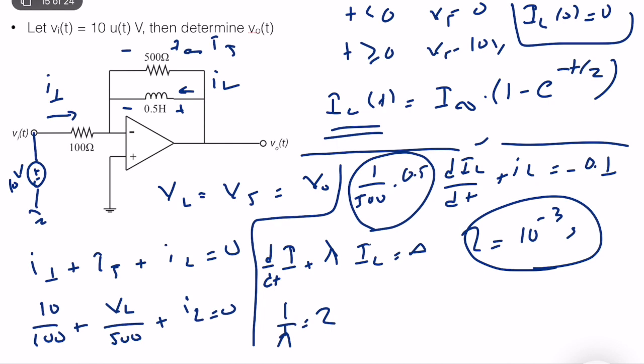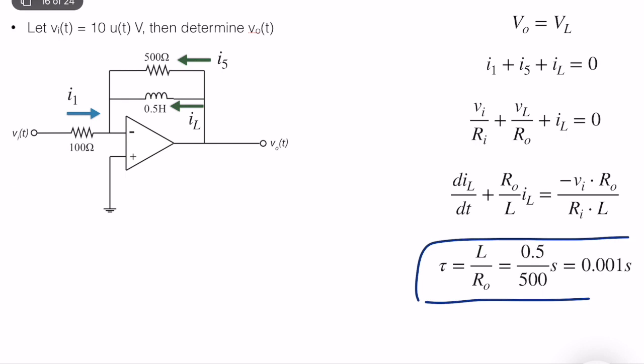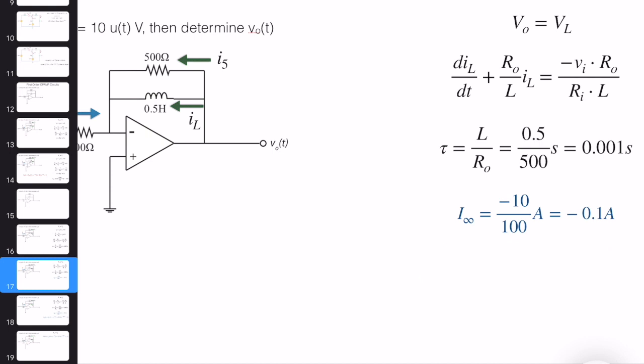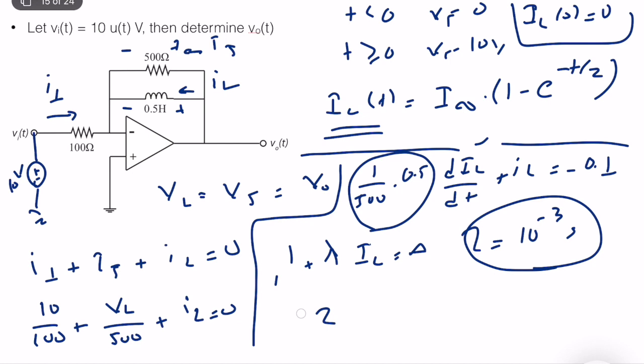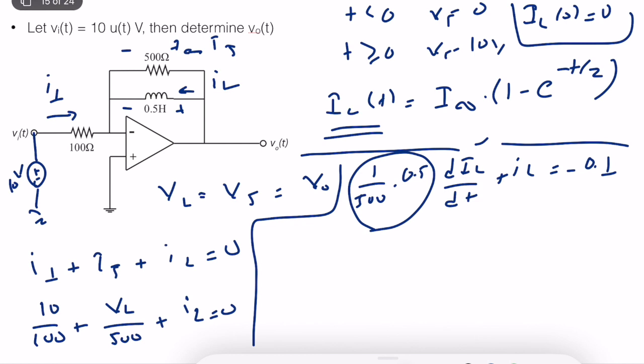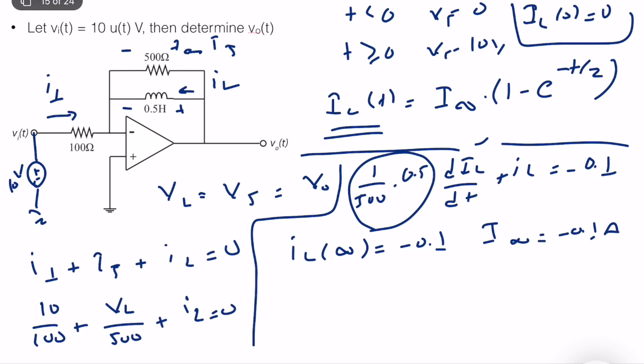The time constant is verified as correct. Next, we compute the steady-state current IL(∞), which is the particular solution. We assume IL is constant at steady state, so its derivative is zero. Substituting into the ODE gives IL(∞) equals minus 0.1. So I_infinity equals minus 0.1 amps.